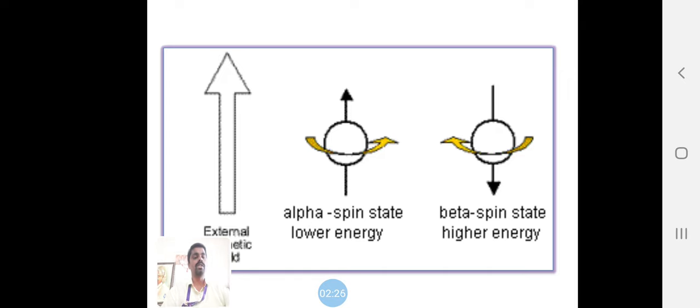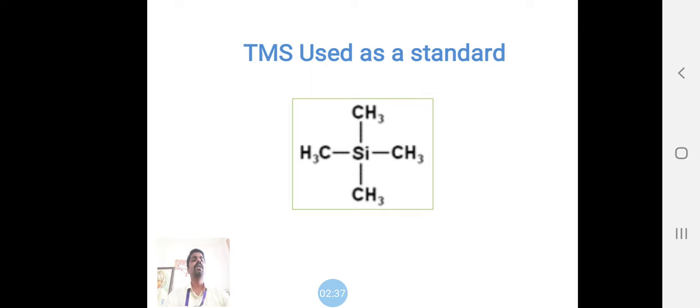The up direction is called alpha or lower energy. The beta is the higher energy. This is used for our standard - TMS tetramethylsilane. The compound has 12 equivalent protons magnetically as well as electrically.